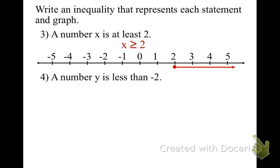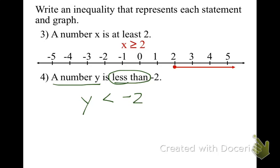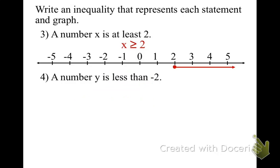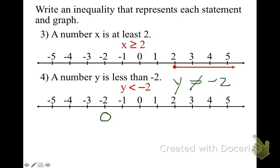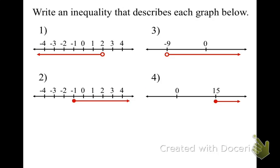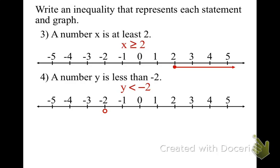Go and try to work on number four on your own. Number four is telling us some number y is less than negative 2 — smaller than negative 2 — with no or equal to. So we set up our inequality. Now, y is smaller than negative 2, and y does not equal negative 2, so at negative 2 you better have an open circle. Smaller numbers go in the negative direction, so be careful of which direction you need to go. We draw our open circle and don't forget to draw your arrow going in the smaller direction.